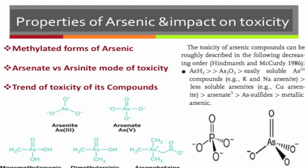Properties of Arsenic and Impact on Toxicity. Inorganic forms of arsenic can be methylated to form monomethylarsonic acid and dimethylarsonic acid, which act as tumor promoters and co-carcinogens. While arsenate is a phosphate analog that interferes with phosphorylation, arsenite reacts with sulfhydryl groups of proteins and inhibits biochemical pathways. In blood, arsenate is reduced to arsenite.